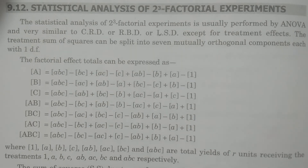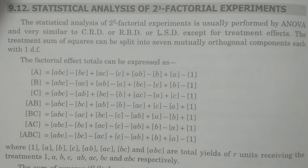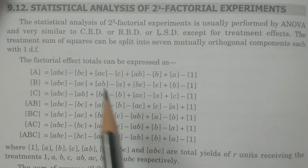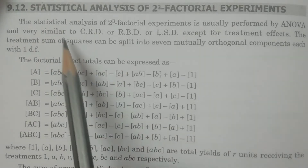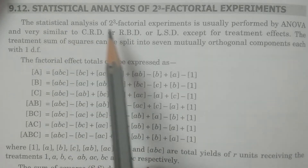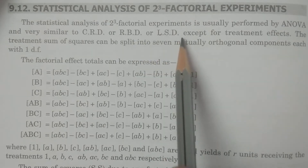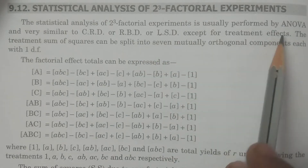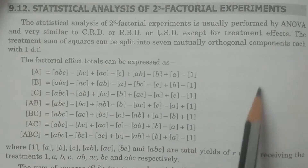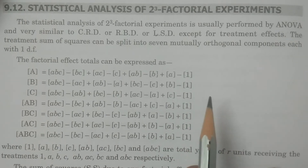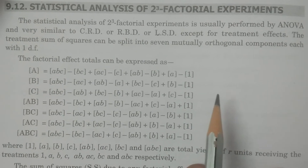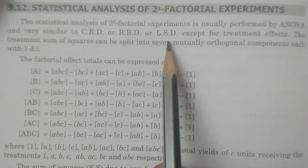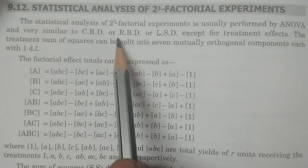It is very simple if you understand it properly. The statistical analysis of a 2-cube factorial experiment is performed by analysis of variance — ANOVA technique — by using either CRD, RBD, or LSD; usually RBD.